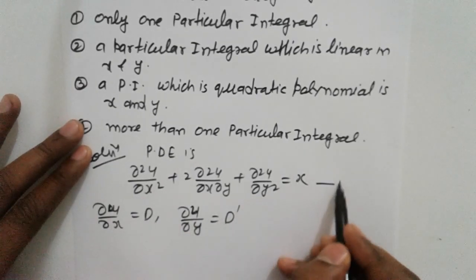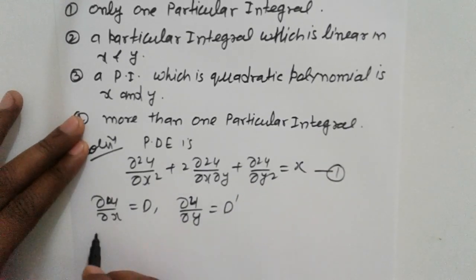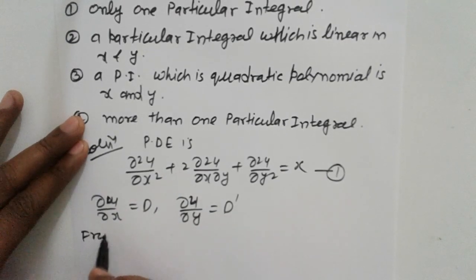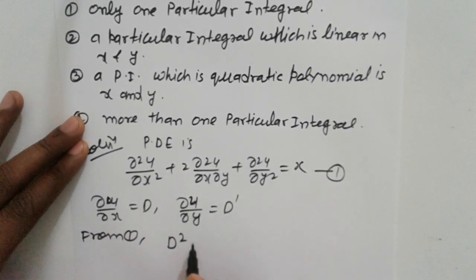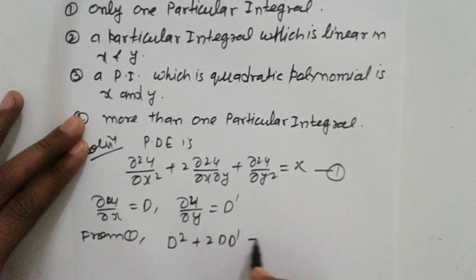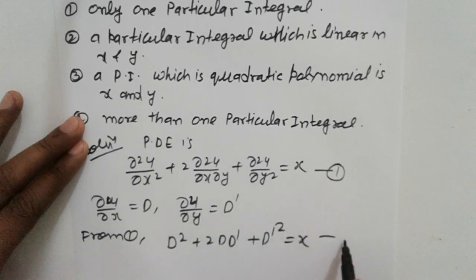So from equation (1), we get: D² + 2DD' + D'² = x. This can be written as (D + D')² = x. This is equation (2).